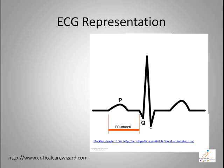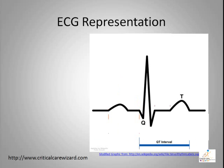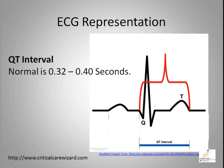The P-R interval is formed from the beginning of the P-wave to the beginning of the Q-wave. This represents the time spent for the electricity to travel from the SA node to the AV node. Normally, the P-R interval is about 0.12 to 0.20 seconds. The Q-T interval is from the beginning of the Q-wave to the end of the T-wave, with a normal range of 0.32 to 0.40 seconds. This represents the time spent to depolarize or repolarize the ventricles.